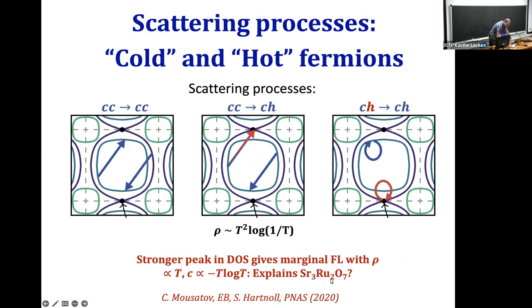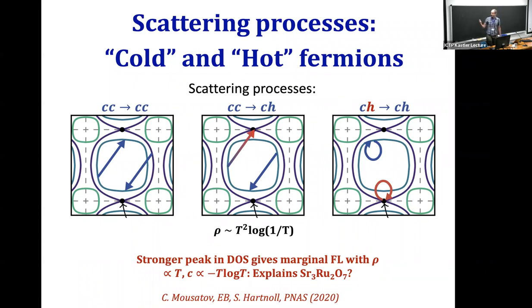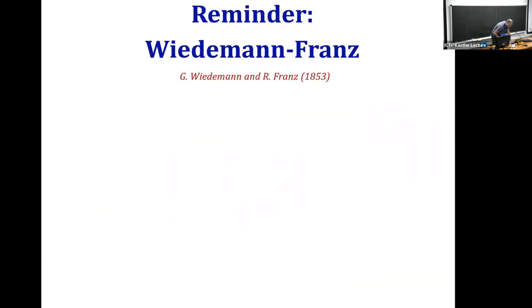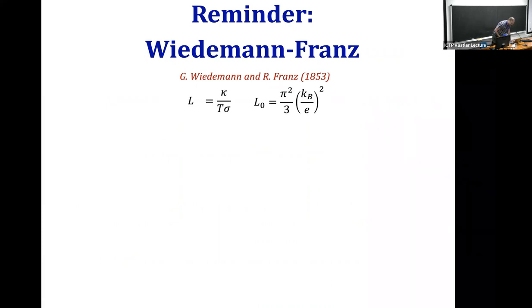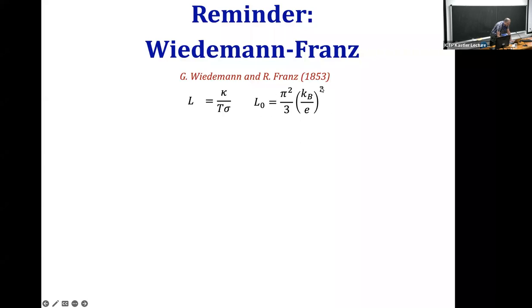Now the question is where do the cold-hot to cold-hot processes show up? They involve small momentum transfer and don't appear in the electrical resistivity, but they are inelastic scattering processes that can relax the quasi-particle energy, so we expect them to appear strongly in the thermal conductivity. As a brief reminder, the Wiedemann-Franz law is an empirically observed relation between the electrical and thermal conductivity in metals. One defines the Lorentz ratio — the ratio of thermal conductivity over temperature times electrical conductivity — and in a broad variety of metals at low temperature this ratio approaches a universal value: π²/3 × (k_B/e)².